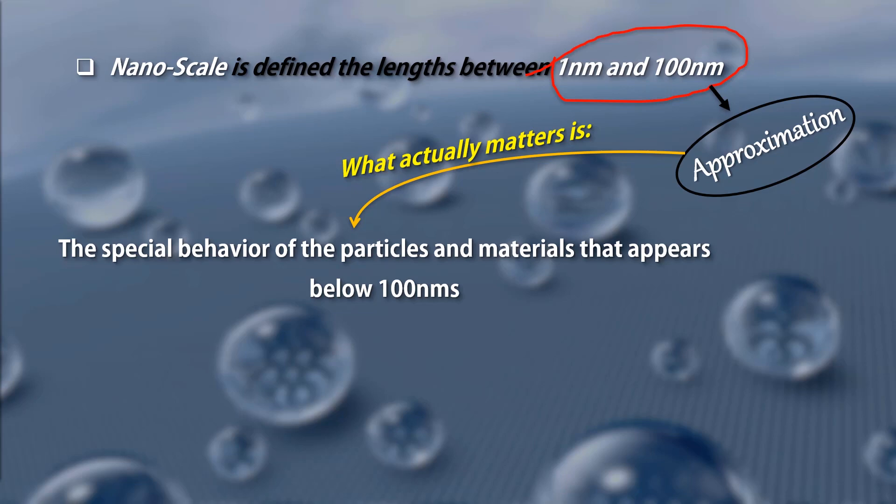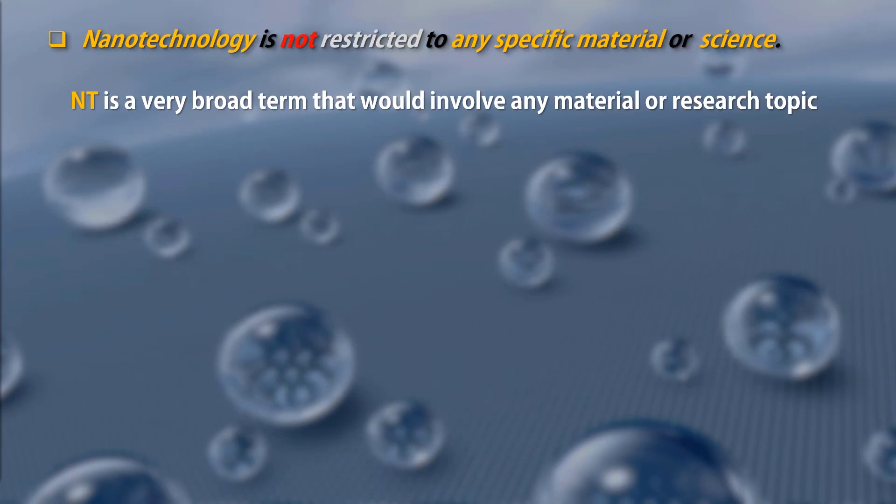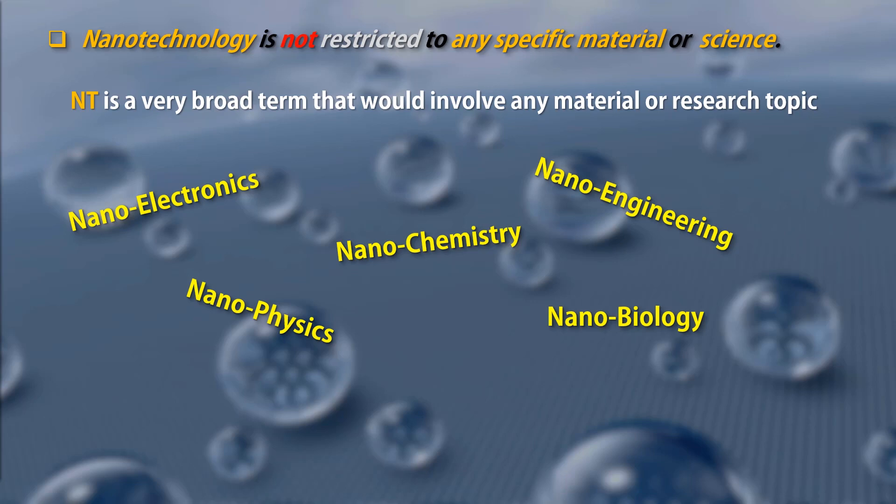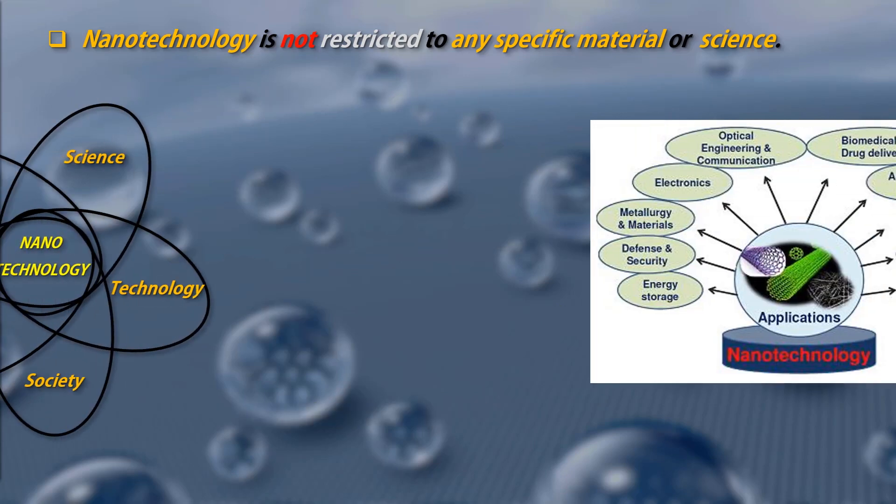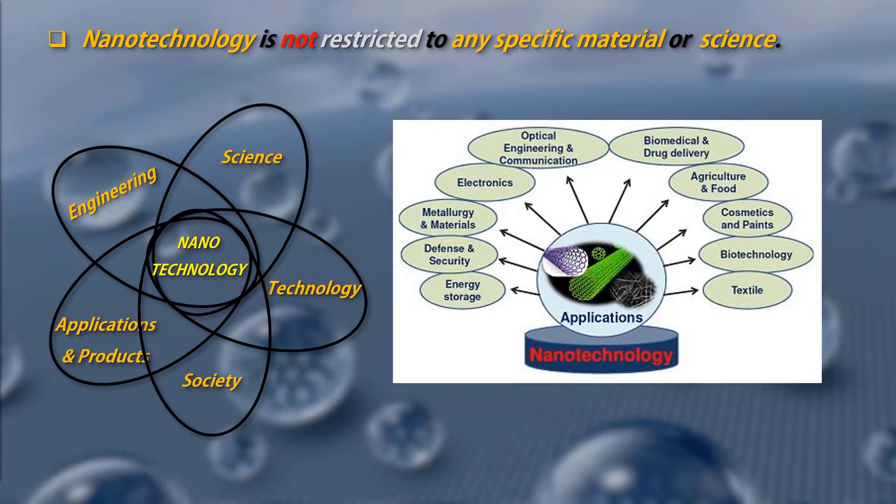There is another point in this definition. There is no sign of any specific material or any particular field of science. Indeed, nanotechnology is a very broad term that involves any material or research topic. In fact, we have nanoelectronics, nanophysics, nanochemistry, nanobiology, nanoengineering, and even nanomachines and nanorobots. Sometimes, findings of nanotechnology are results of collaboration between people with different background. Thereby, nanotechnology can be seen as an interdisciplinary field of research.